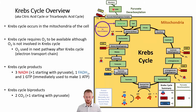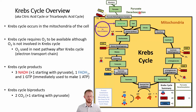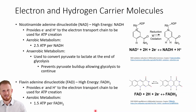We also produce one FADH2 molecule and one GTP molecule per cycle. The GTP is immediately converted — GDP is released with an inorganic phosphate, and in the process ADP is converted to ATP, so we get one ATP molecule from this GTP. We also end up with two CO2 molecules produced in the cycle, and a third CO2 if you're including pyruvate decarboxylation from glycolysis, giving three CO2s total when starting from glycolysis.